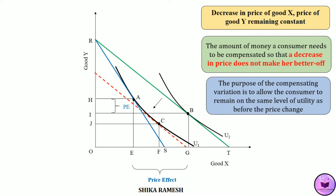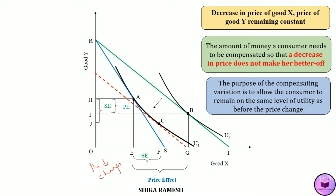We already know that the consumer has purchased an additional EG amount of good X because of the decrease in the price of good X, the price of good Y remaining the same. Now out of this EG, EF amount of good X has been purchased because of the substitution effect. The movement from point A to C shows the substitution effect — when the price of good X decreased, good X became comparatively cheaper than good Y, which is why the consumer substitutes more of good X for Y while maintaining the same utility level.